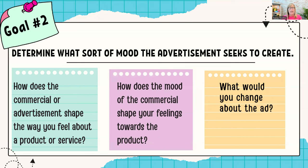Deeply think about that. How does the commercial or advertisement shape the way you feel about Band-Aids now that you've seen it? What is in your mind? What is this commercial doing for you? The point of this activity is to see how well you can get into analytical voice and thinking without National Board, outside of National Board. How can you do that? If you're not really good at it with this activity, you need to practice.